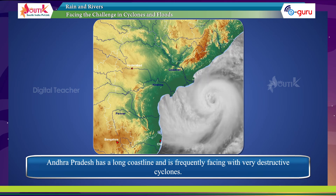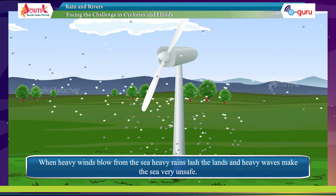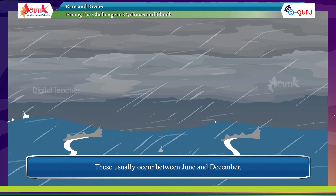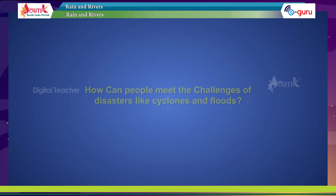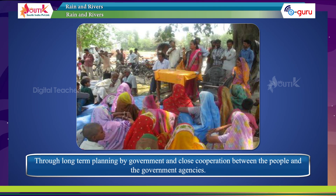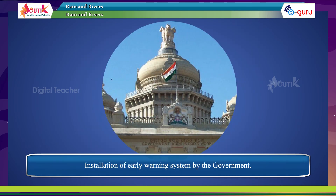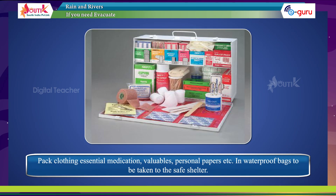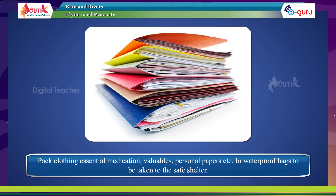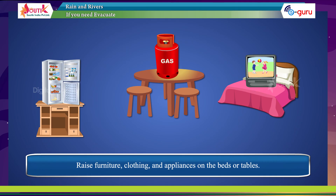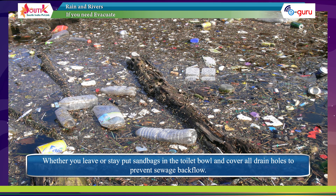Andhra Pradesh has a long coastal line and frequently faces very destructive cyclones. When heavy winds blow from the sea, heavy rain lashes the land and heavy waves make the sea very unsafe. These usually occur between summer seasons. People can meet the challenges of disasters like cyclones and floods through long-term planning by the government and close cooperation between people and government agencies. This includes installation of early warning systems, preparing bags with clothing, essential medication, valuables, and personal papers in waterproof bags for evacuation to safe shelters, and raising furniture and appliances on beds or tables while turning off power.